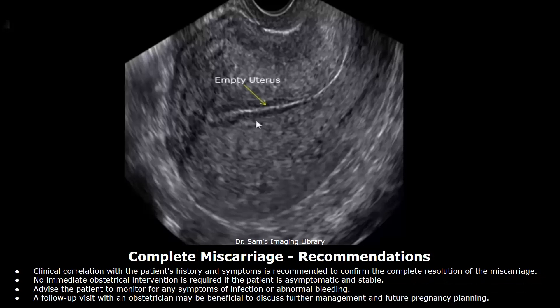Along with a thin and homogeneous endometrial lining, these findings support the diagnosis of complete miscarriage. Recommendations: clinical correlation with the patient's history and symptoms is recommended to confirm the complete resolution of the miscarriage; no immediate obstetrical intervention is required if the patient is asymptomatic and stable; advise the patient to monitor for any symptoms of infection or abnormal bleeding; a follow-up visit with an obstetrician may be beneficial to discuss further management and future pregnancy planning.